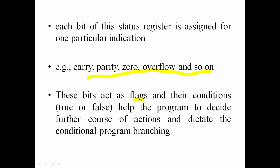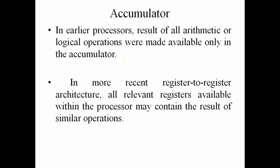These flags represent conditions. If you have a program, the flag will indicate the carry condition. We check these for conditional branching. In earlier architectures, the result was stored in the accumulator. In register-to-register architecture, the result is available in a general register rather than only in the accumulator.